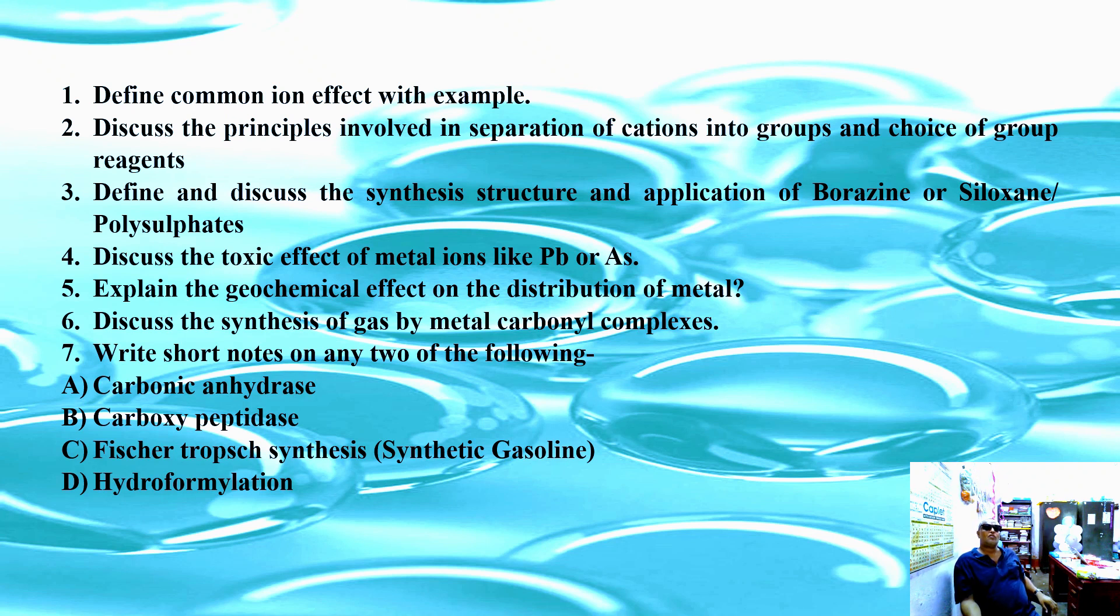Question number four, discuss the toxic effects of metal ions like Pb or As. Question number five, explain the geochemical effect on the distribution of metal.